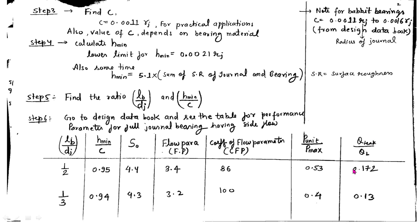This is the whole procedure for the design of a journal bearing. Other parameters like maximum fluid film pressure and side leakage can be obtained from the performance parameter table as shown. I hope you enjoyed the video. Please subscribe to my channel and press the bell icon for upcoming informative videos. Thank you, stay positive and stay healthy.